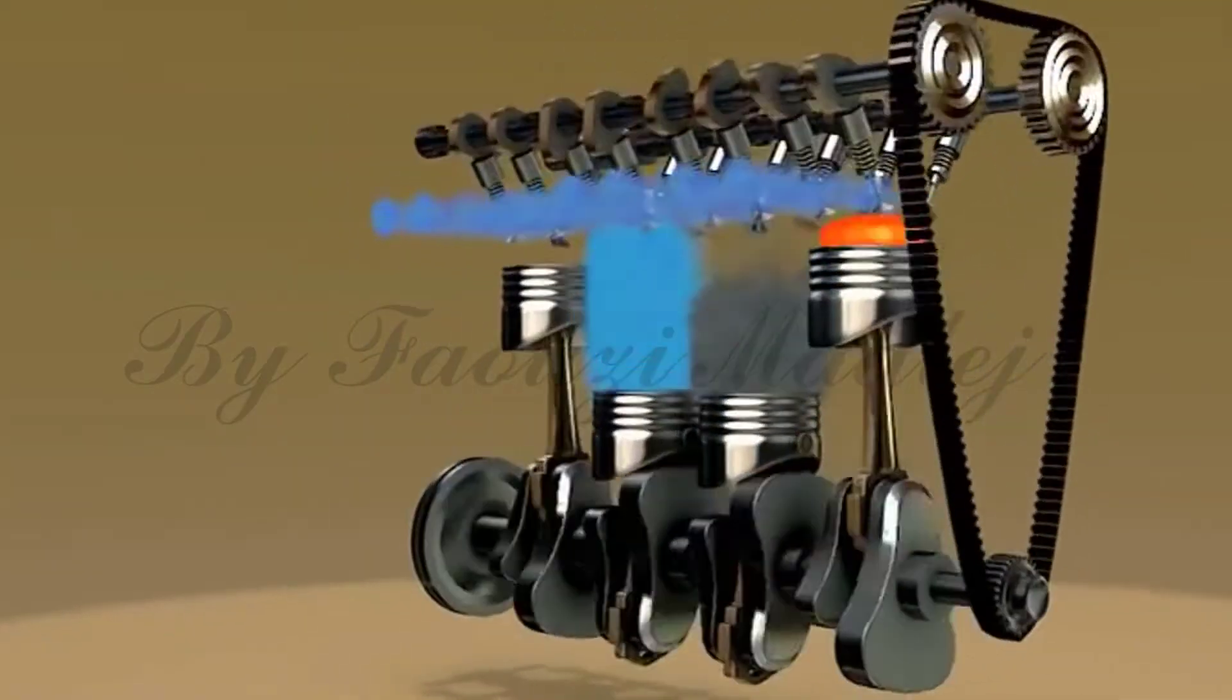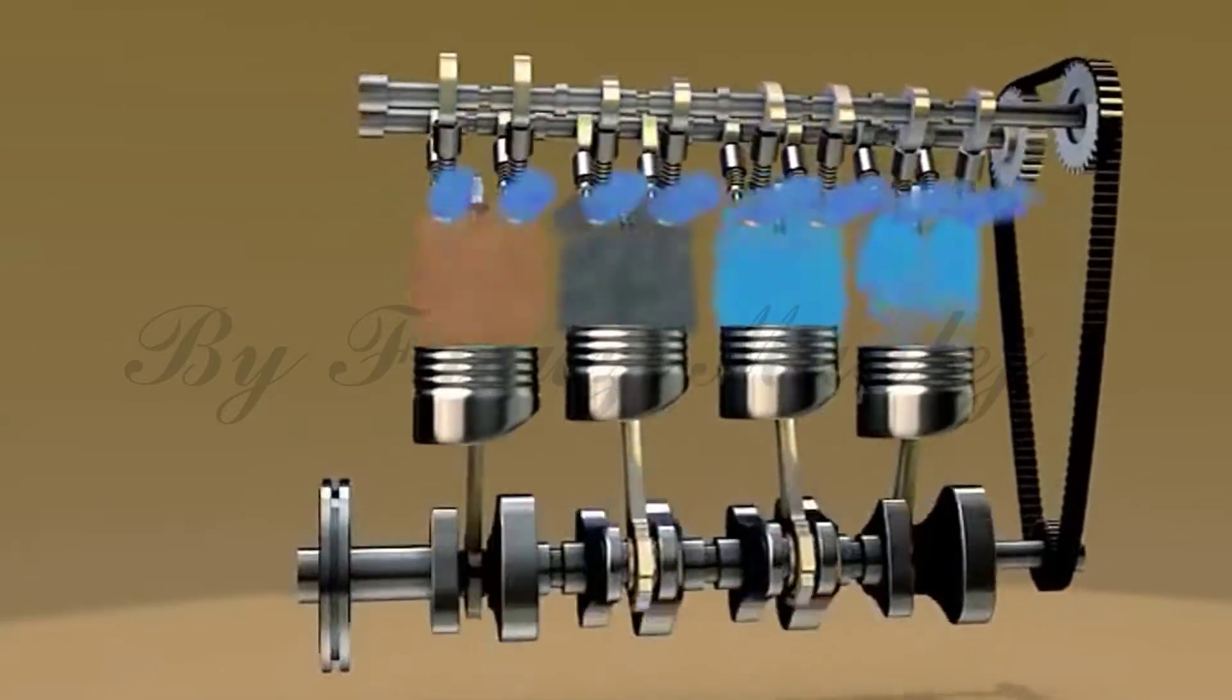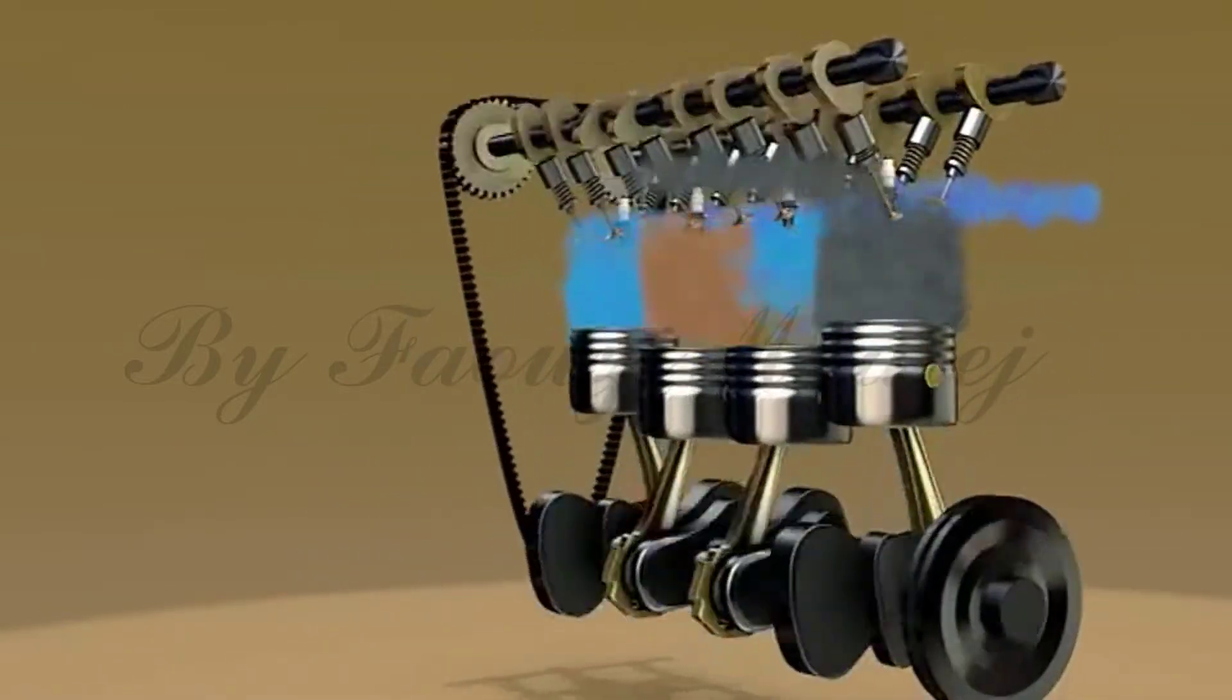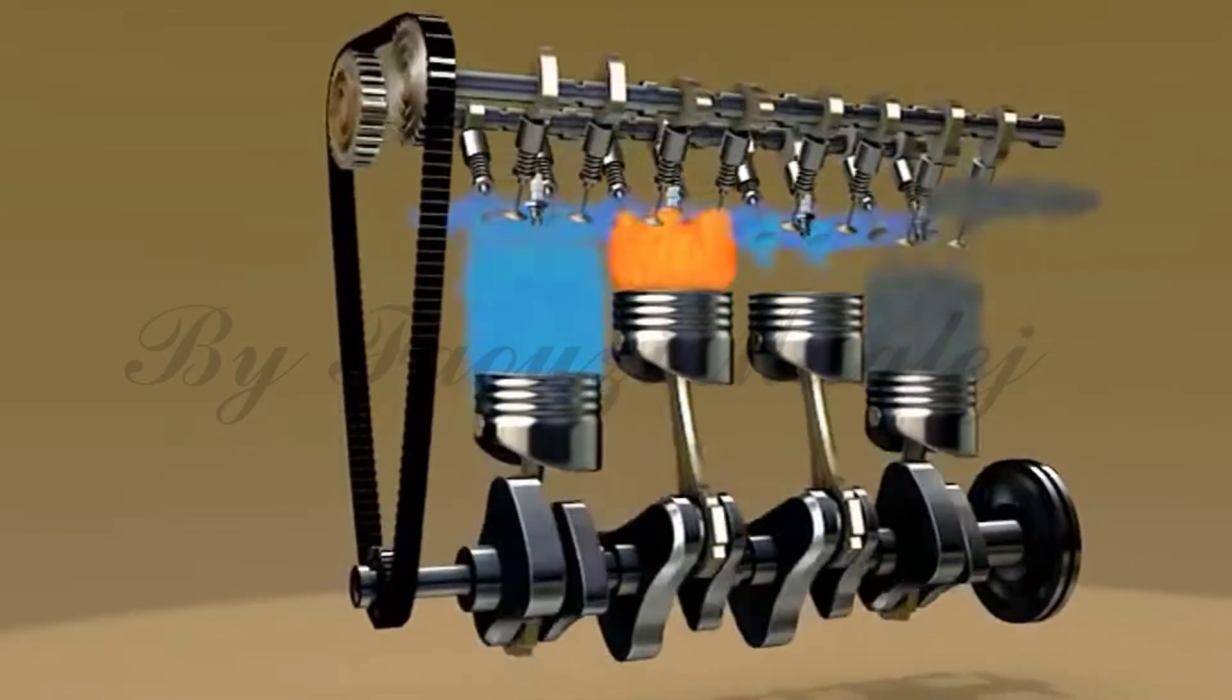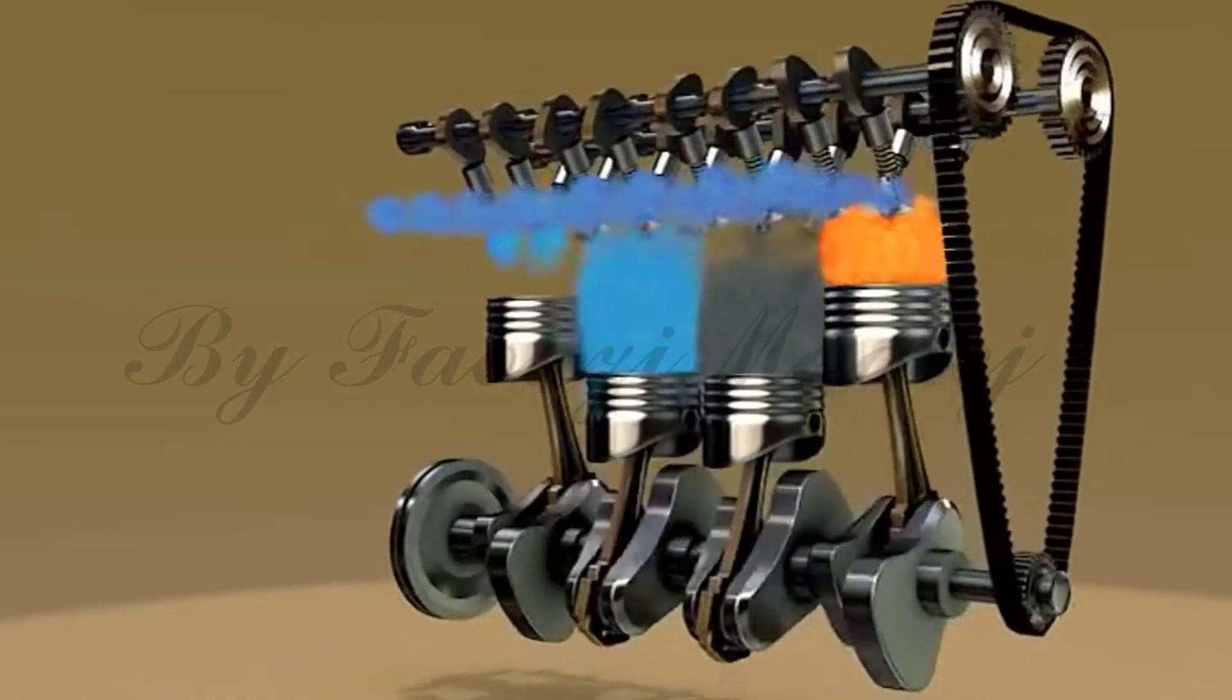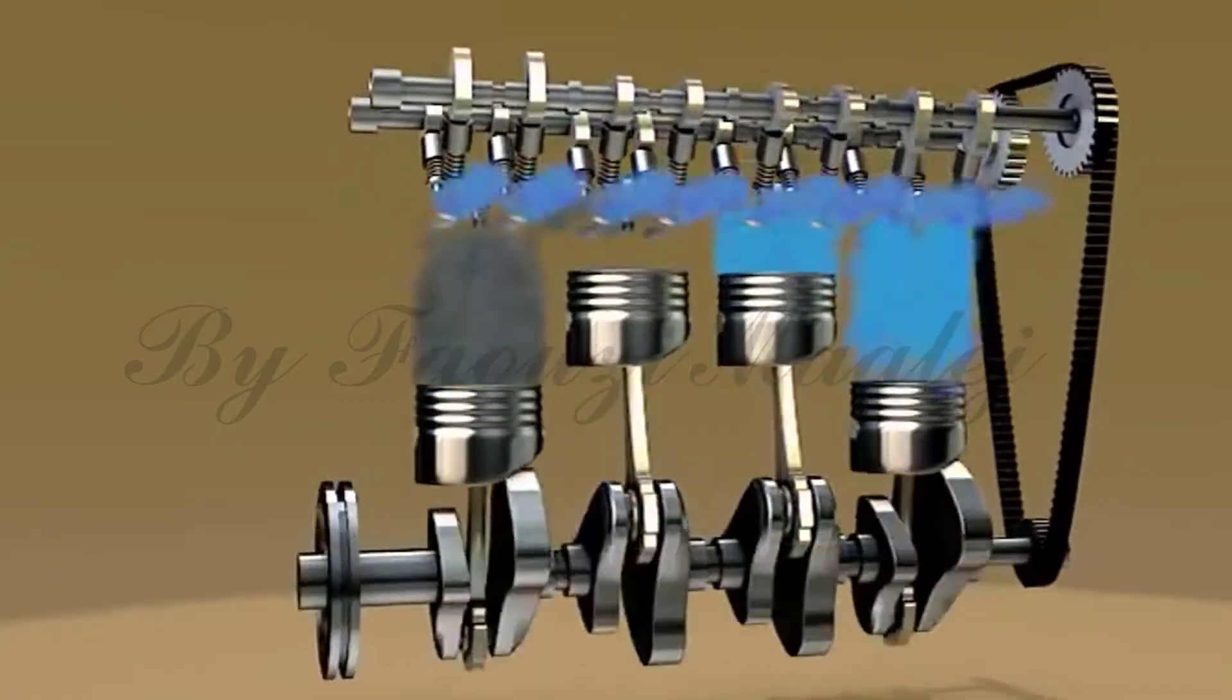A four-stroke engine is an internal combustion engine in which the piston completes four separate strokes: intake, compression, power, and exhaust during two separate revolutions of the engine's crankshaft, and one single thermodynamic cycle.